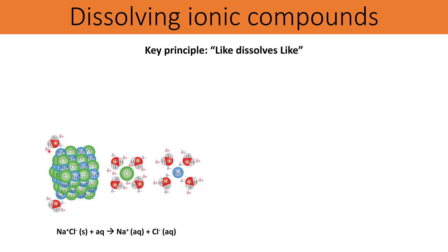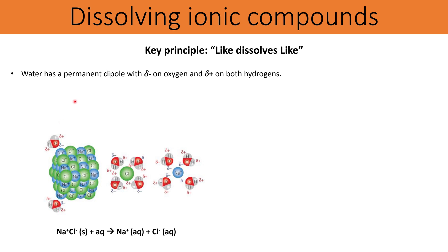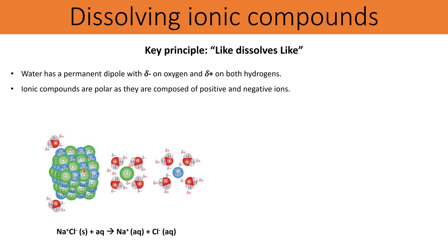Water is a polar molecule because it has a permanent dipole with delta negative charges on the oxygen atoms due to its higher electronegativity and lone pair of electrons, and there are delta positives on the hydrogens. Sodium chloride is also a polar compound because it's comprised of positively charged and negatively charged ions.